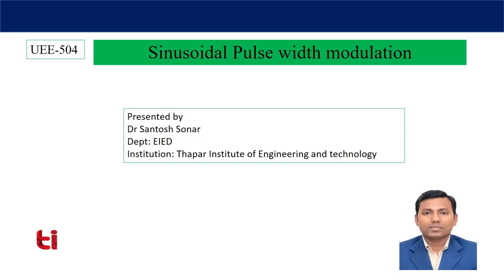Today I am going to discuss Sinusoidal Pulse Width Modulation. Last class I discussed multiple pulse width modulation, where we saw that output voltage can be controlled by controlling the number of pulses as well as the width of each pulse. In multiple PWM, the width of all pulses was the same, which causes more harmonics across the output voltage. So to get better output voltage quality, Sinusoidal Pulse Width Modulation is the most popular technique.